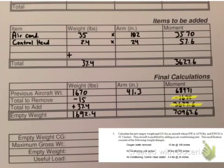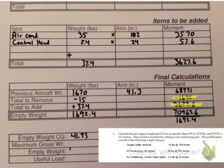Remember, moment divided by weight — mom's over weight equals arm. Take the 70,000-something moment divided by the 1600-something weight. That gives us the arm, which for the entire aircraft is the center of gravity. The new CG is 41.93. Then carry down the empty weight from the box above to get the new empty weight.